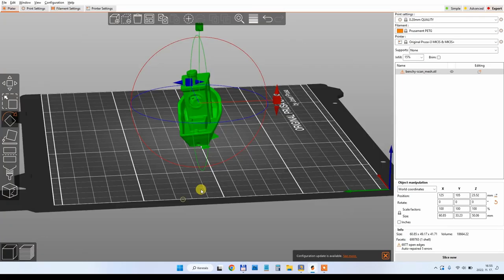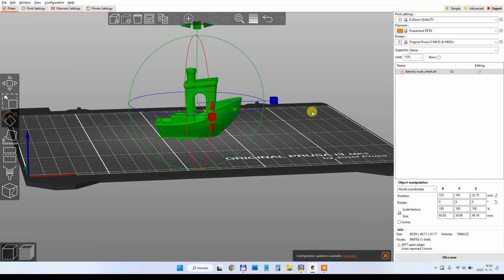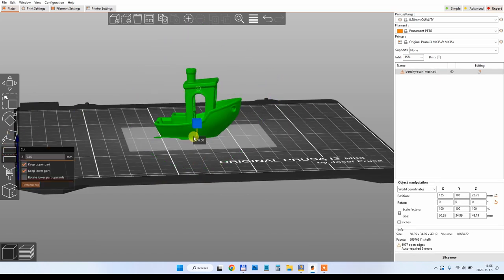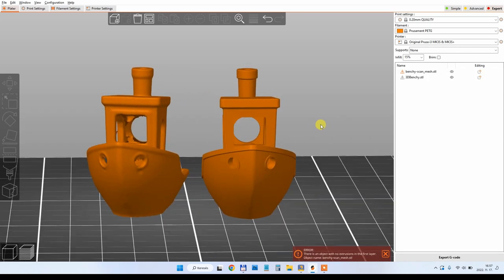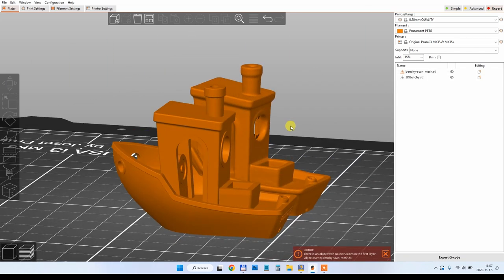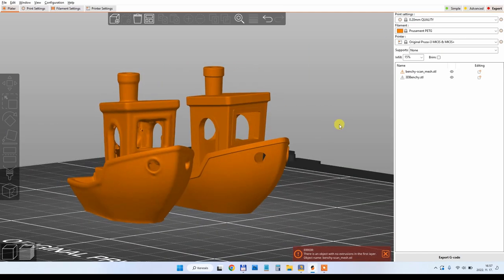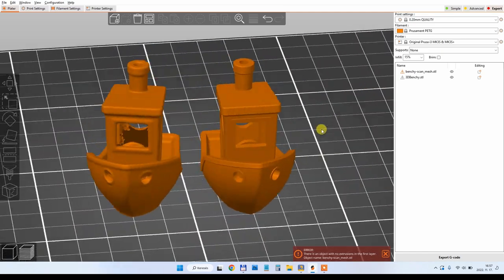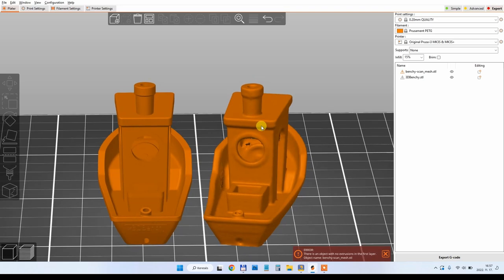And I decided to import it into PrusaSlicer, but first, always I have to rotate it for some reason and I always like to cut maybe half millimeter from the bottom to get flat surface. And side by side here you can see the original benchy. I have this error message in the PrusaSlicer, a reason for that is that I forgot to check the closing of the surfaces in the Revo Scan.